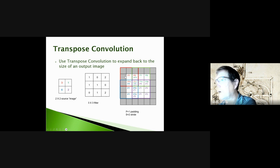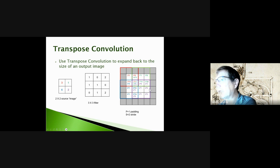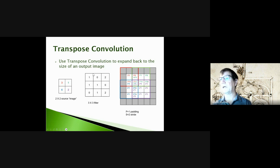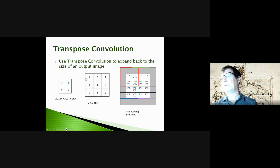We stride down again by two, reset to the left-hand side, and apply the filter focused on the lower-left source value — six — filling in those values. Then finally we do the last corner. In overlapping regions all these boxes contribute and are summed. This is how we build up an image using a filter that takes source data and interpolates or expands it — that's transpose convolution.